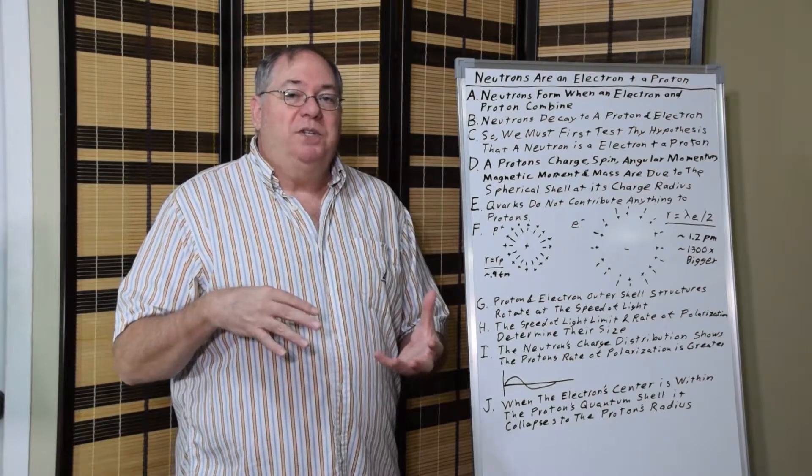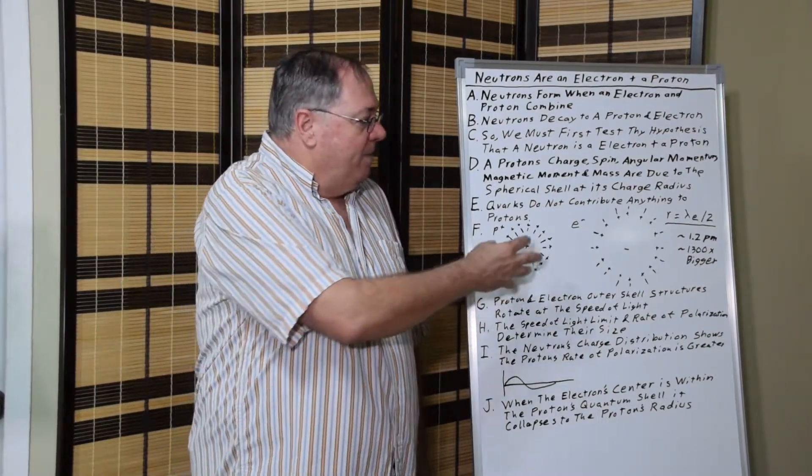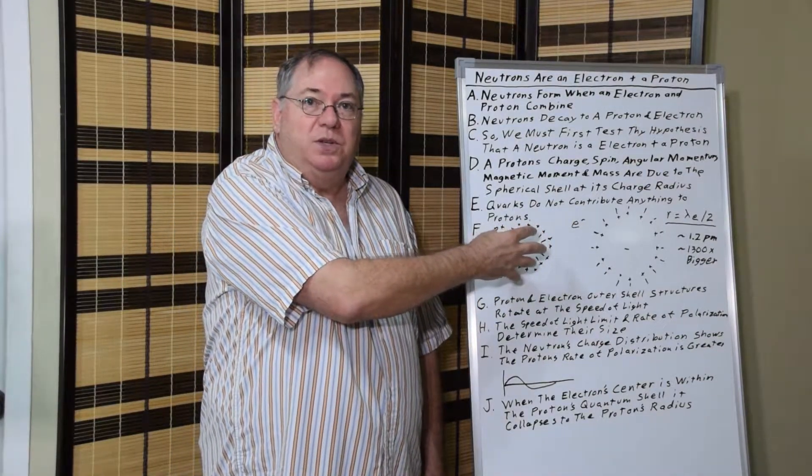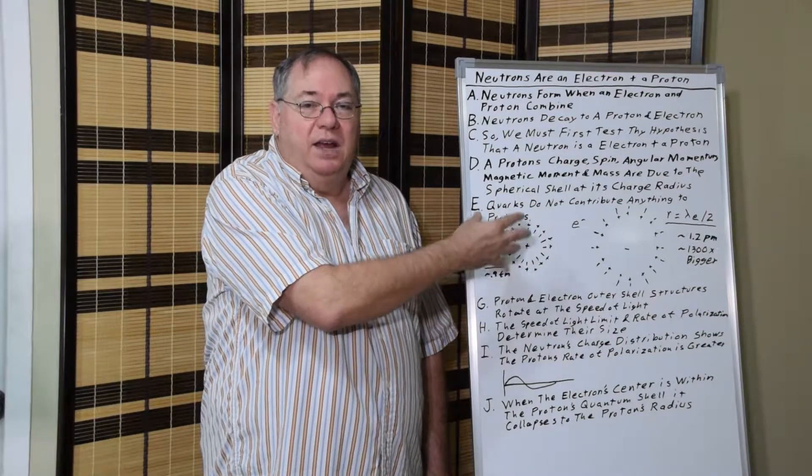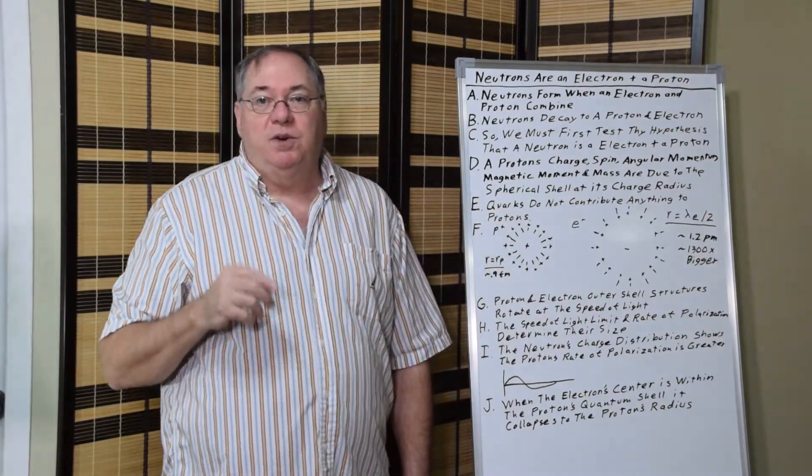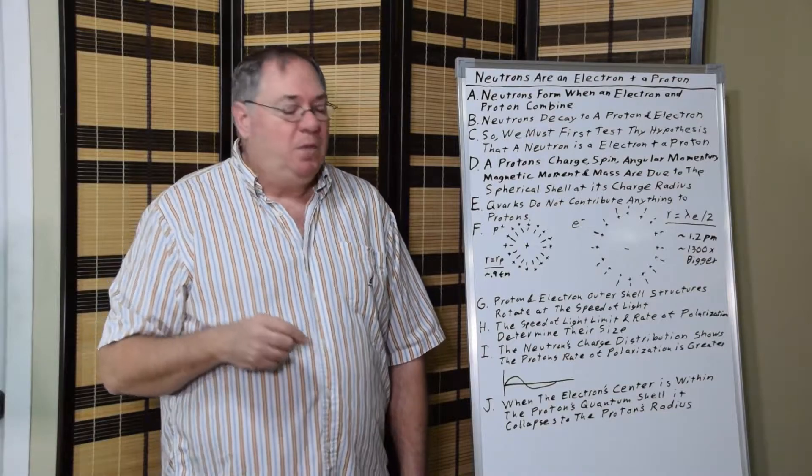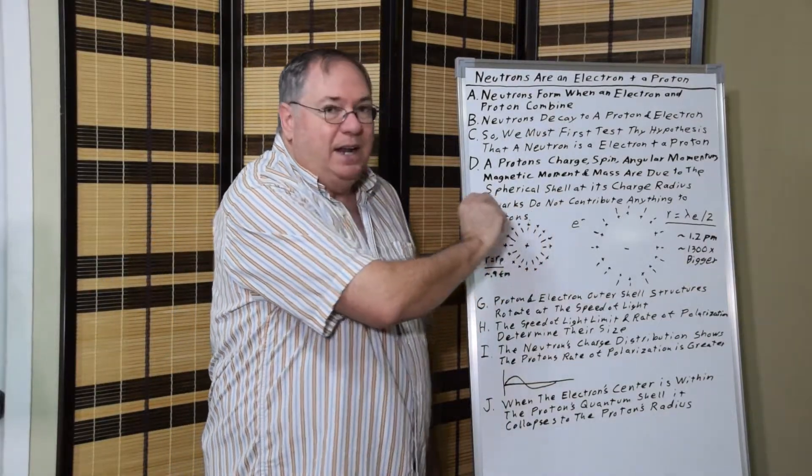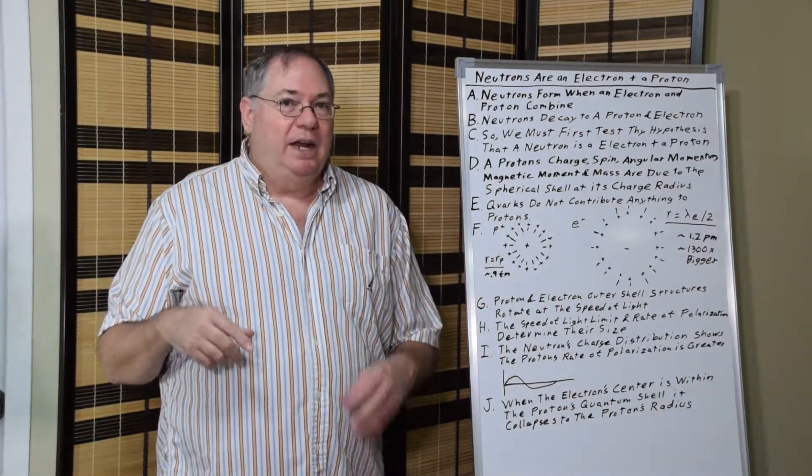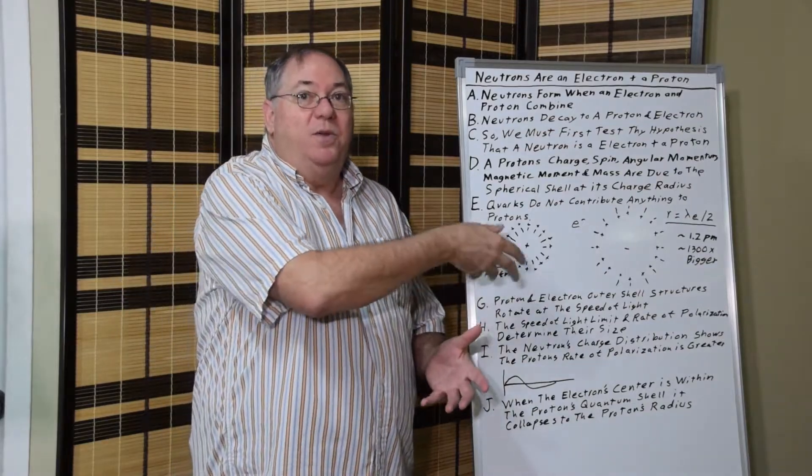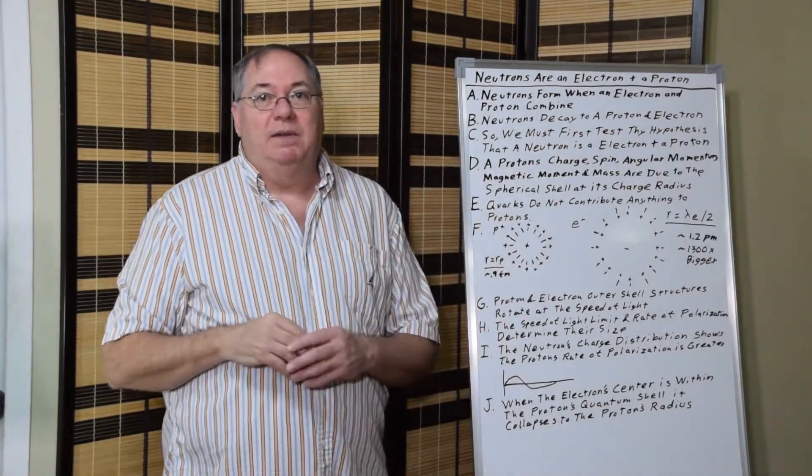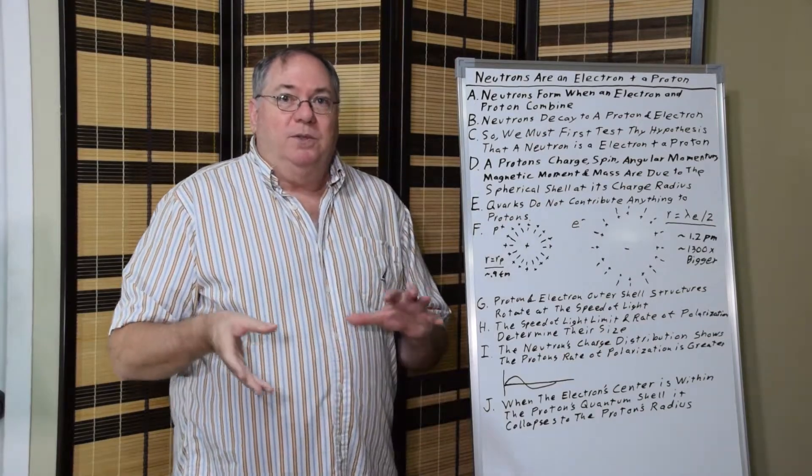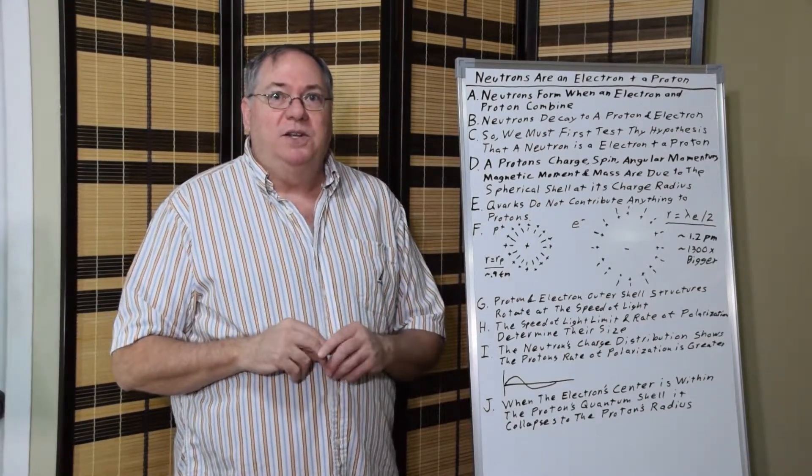And these dipoles are rotating because we know that the magnetic moment is equal to a shell the size of the proton's charge radius rotating at the speed of light. Which means each of these little dipoles is rotating at the speed of light, making it look like the whole thing is rotating at the speed of light, when it's really just the little dipoles rotating more or less in unison.